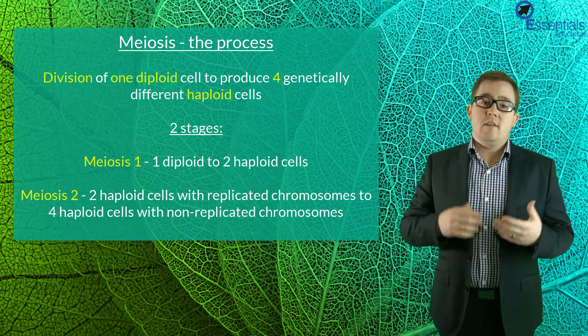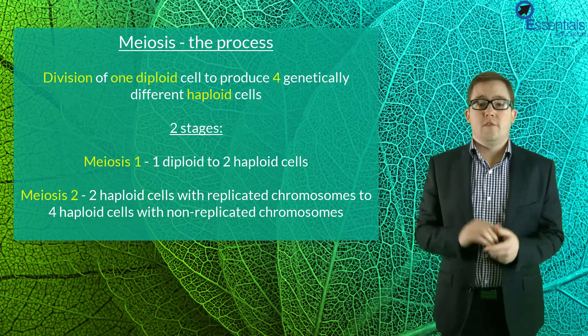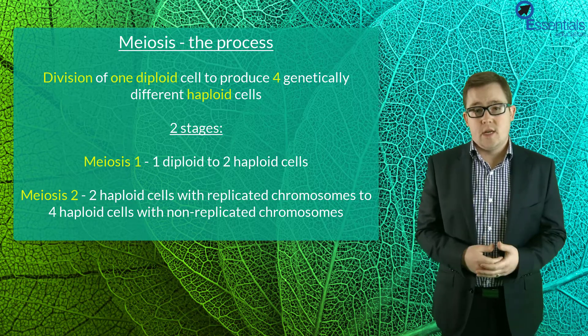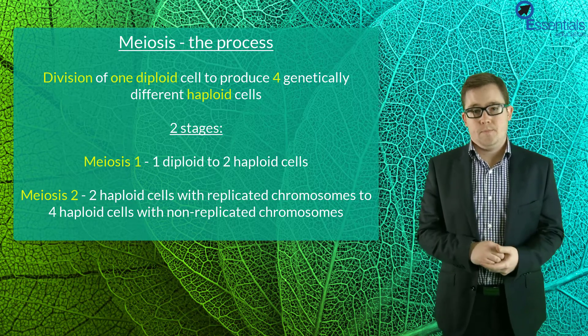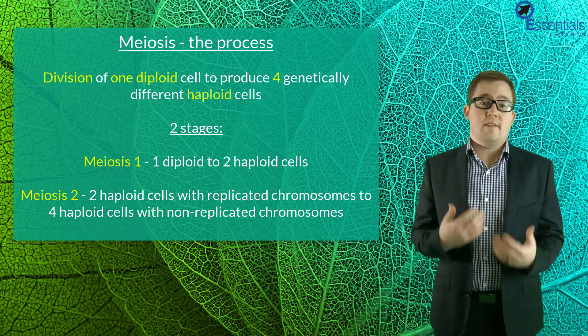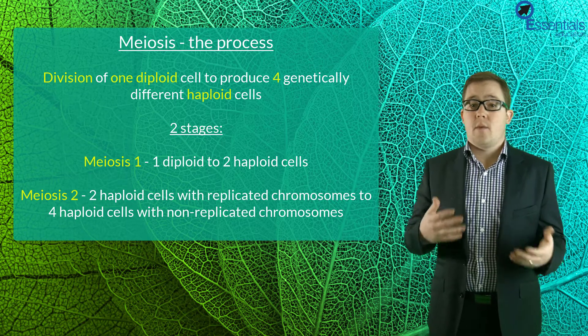Now in short, meiosis is the division of diploid cells to produce four genetically different haploid cells and it contains two main stages, meiosis I and meiosis II. Each of these stages are split into the stages prophase, metaphase, anaphase and telophase, and can be summarized as follows.